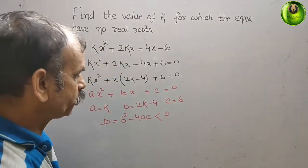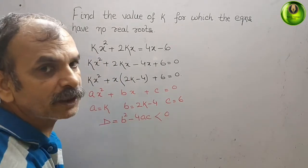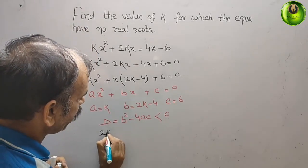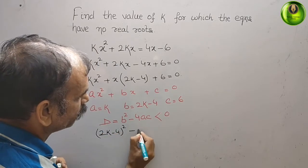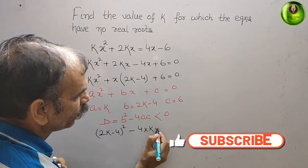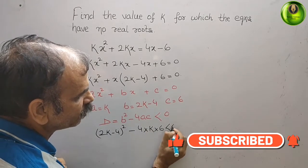Now substitute a, b, and c in your discriminant. What you will get? b², that means (2k - 4)² minus 4 times a is k times c is 6, less than 0.